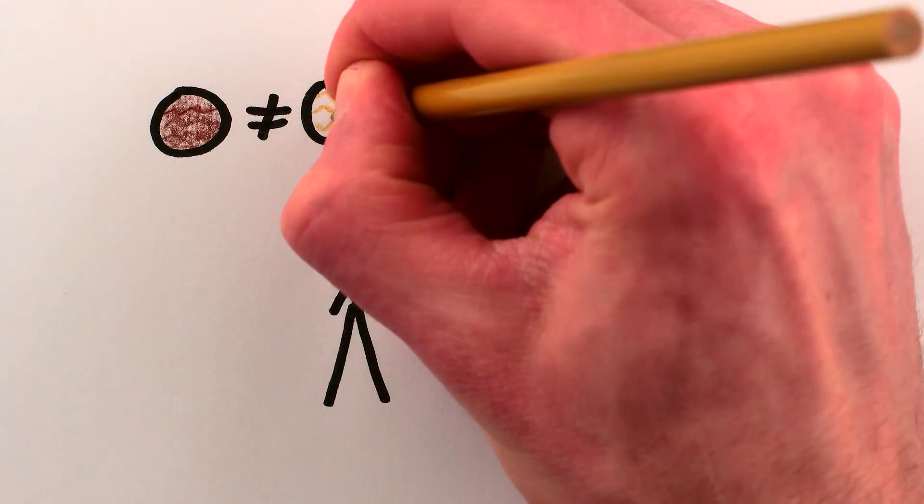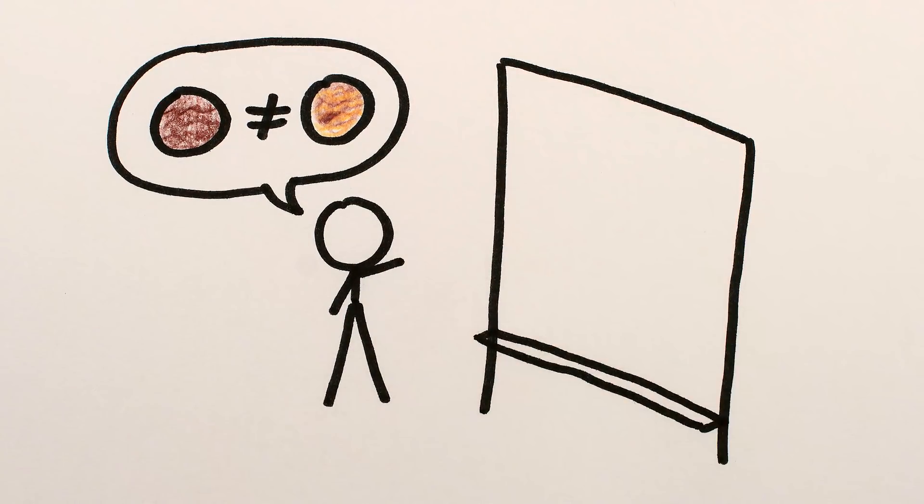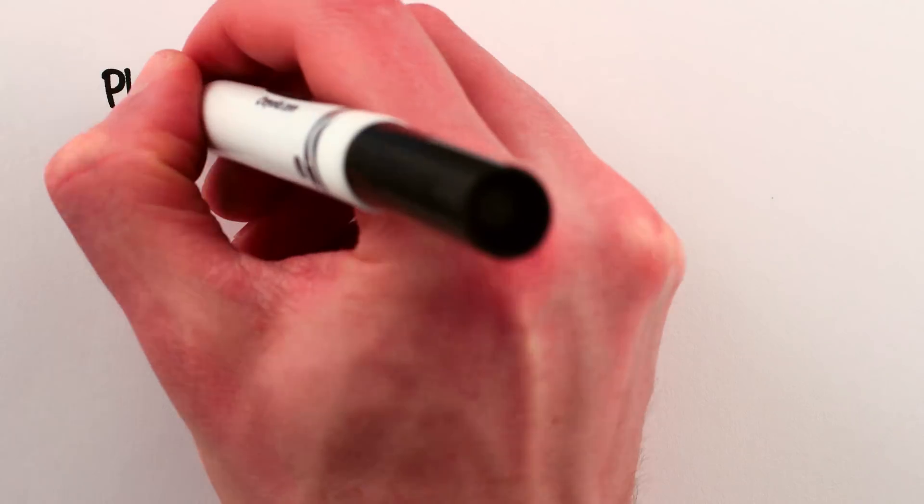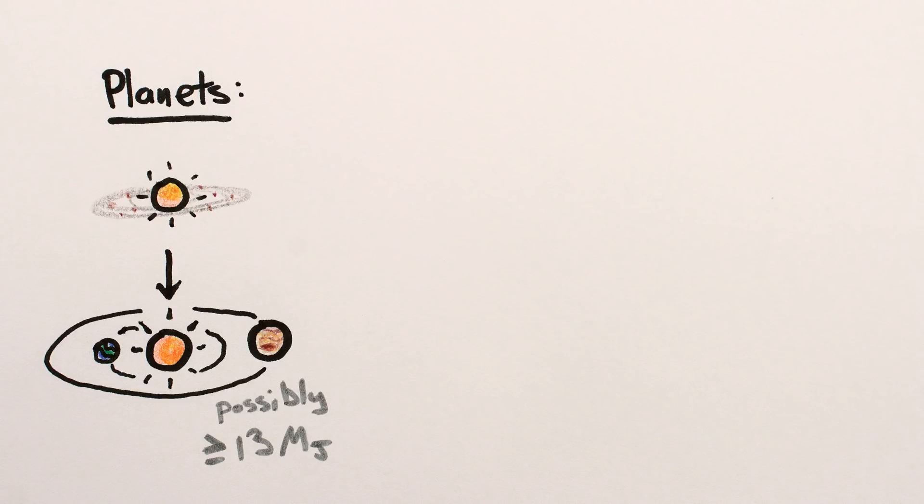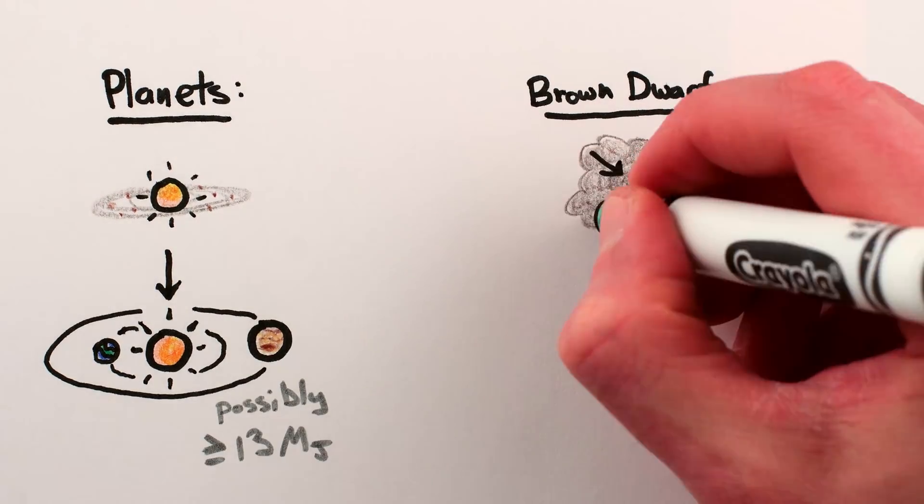So, among those who think that the evidence suggests brown dwarfs are different from giant planets, what supposedly distinguishes them is how they formed, their consequent behavior, and their composition. The claim is this: planets, no matter how big, appear to be the leftovers of star formation, and brown dwarfs, no matter how small, appear to be failed stars.